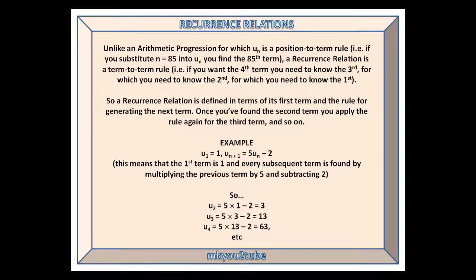Unlike an arithmetic progression, for which u_n is a position-to-term rule (i.e., if you substitute n equals 85 into u_n, you find the 85th term), a recurrence relation is a term-to-term rule. If you want the fourth term, you need to know the third, for which you need to know the second, for which you need to know the first.